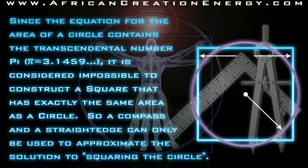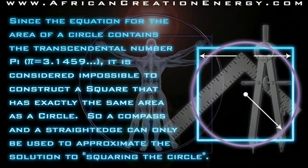However, since the equation for the area of the circle contains the transcendental number pi, which is 3.1459 and it keeps on going forever, it is considered impossible to construct the square that has exactly the same area as a circle, because you're not going to be able to find a straight edge that has an infinite precision. So a compass and a straight edge can only be used to approximate the solution to squaring a circle.